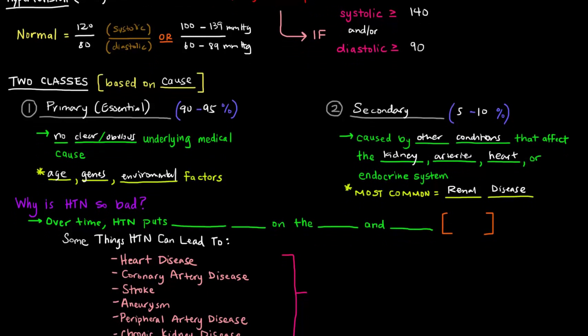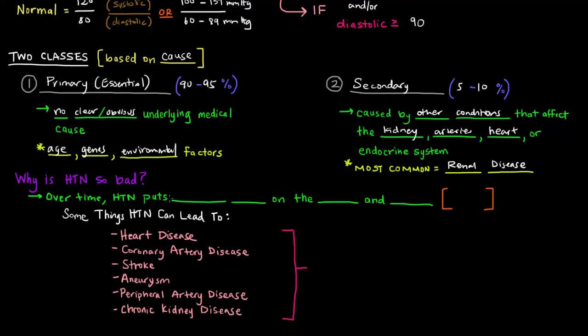But why is hypertension so bad? The reason why is that hypertension puts a continued strain on the heart and arteries in your body. And that is bad because that causes damage to those organs. And the reason that's bad, the damage to these organs is bad because we need our cardiovascular system in order to survive.